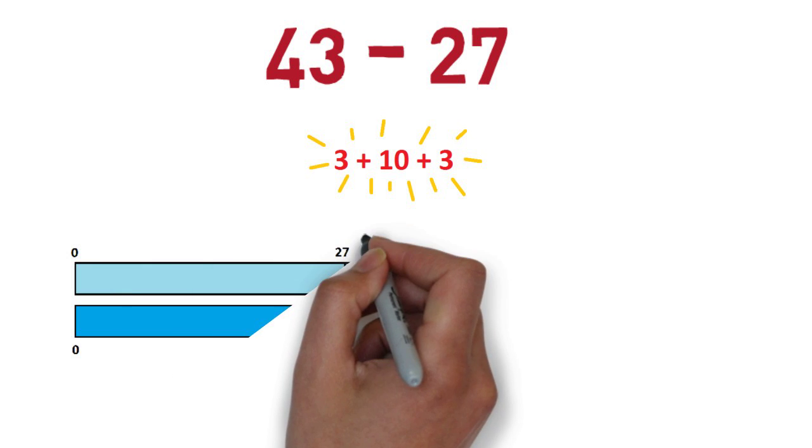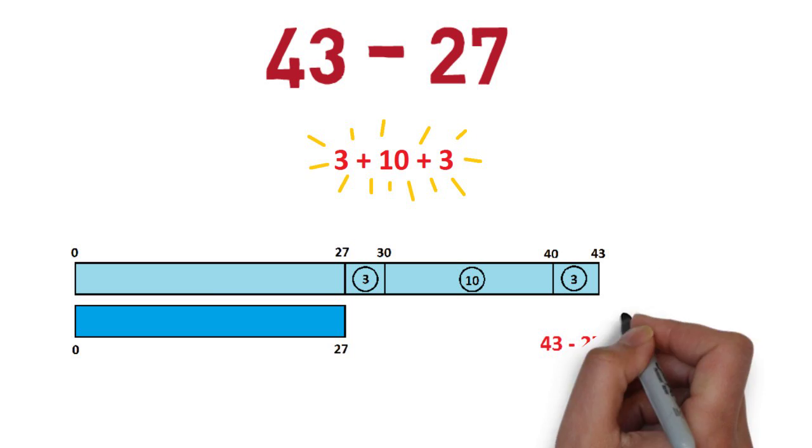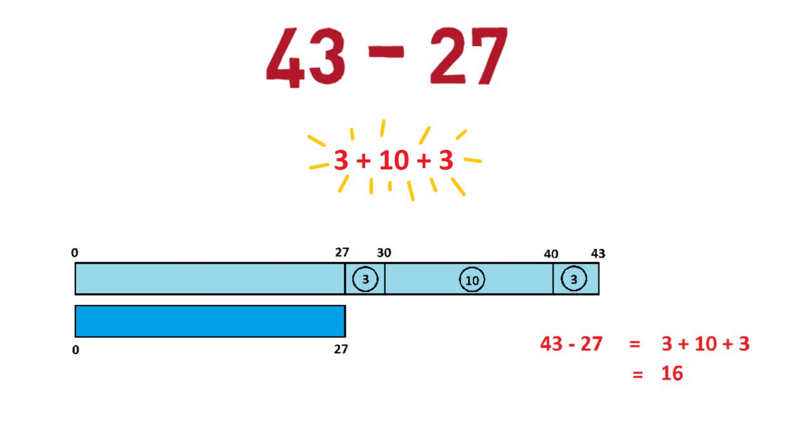Actually, I see this answer in my mind. I see a pair of rulers side by side. Put a 43-inch ruler and a 27-inch ruler next to each other, and we just see that their lengths differ by 3 inches and 10 inches and 3 inches. My brain naturally chunks the difference into 3 pieces. 3 and 10 and 3, the difference is 16.